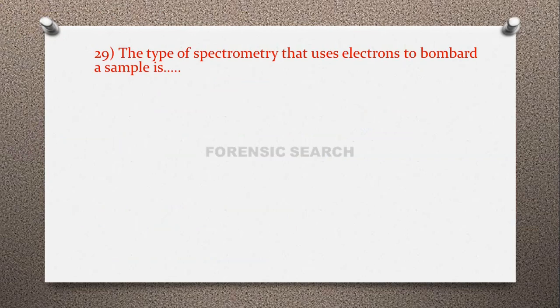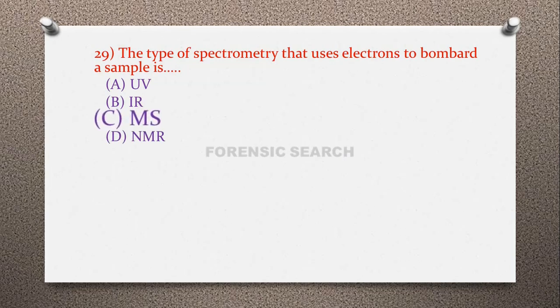Question 27: The type of spectrometry that uses electrons to bombard a sample is — option A: UV spectroscopy, option B: IR spectroscopy, option C: mass spectroscopy, option D: NMR spectroscopy. The correct answer is option C — mass spectroscopy.